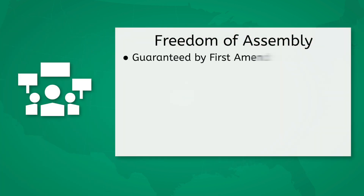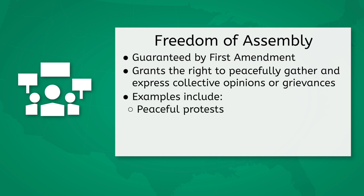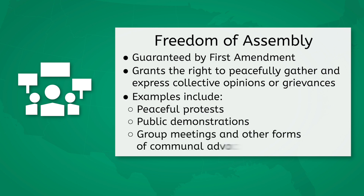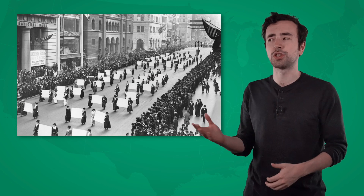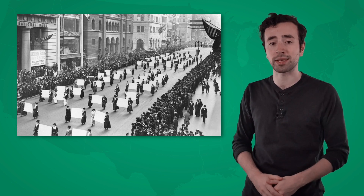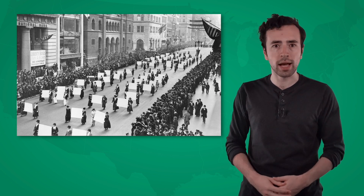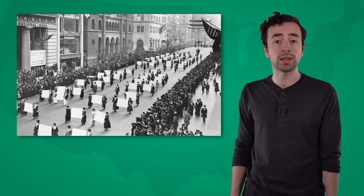The First Amendment guarantees the freedom of assembly, which includes the rights to peacefully gather and express collective opinions or grievances. This right allows people to come together for a common purpose and advocate for the changes they'd like to see in society. People can use peaceful protests, public demonstrations, group meetings, and other forms of communal advocacy to shape public opinion, influence policy decisions, and hold their government accountable. The women's suffrage movement in the early 20th century demonstrates the importance of freedom of assembly. Suffragettes organized marches, parades, and rallies to advocate for women's voting rights. Through their collective actions, they raised public support, challenged societal norms, and paved the way for the ratification of the 19th Amendment in 1920, granting women the right to vote.